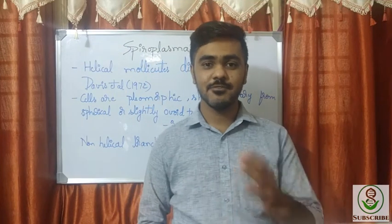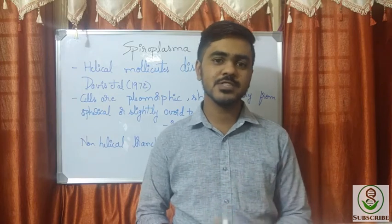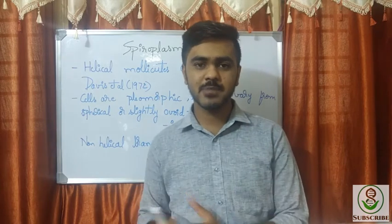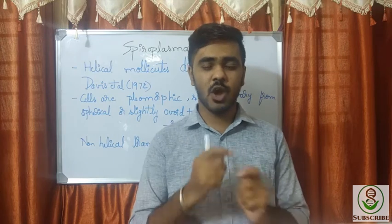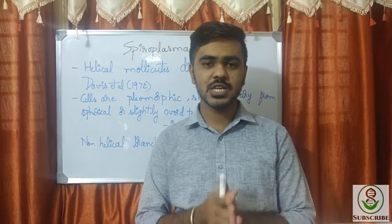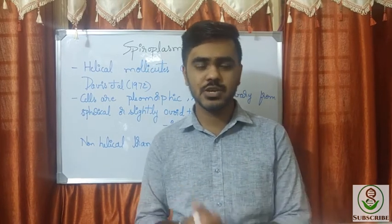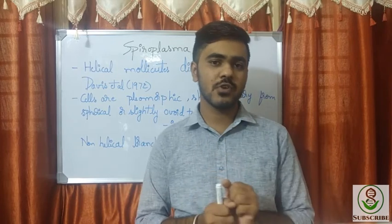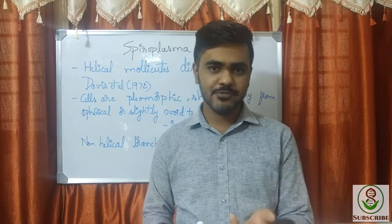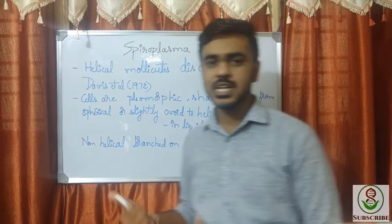Welcome to our next video. In today's class we are continuing the previous video on plant pathology. We have completed the phytoplasma topic and are dealing with mycoplasma topics — organisms similar to bacteria. Under mycoplasma we have mollicutes and rickettsia-like organisms. Under mollicutes there are two types: phytoplasma and spiroplasma. We have completed phytoplasma and now we shall deal with spiroplasma.